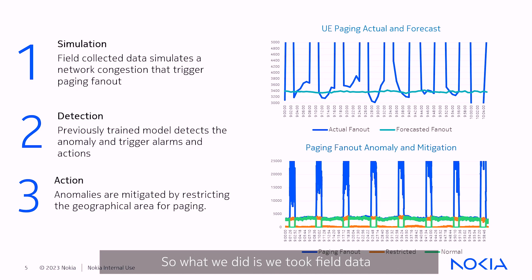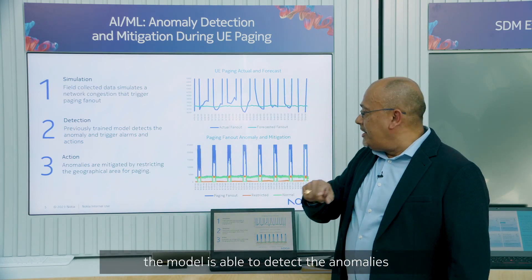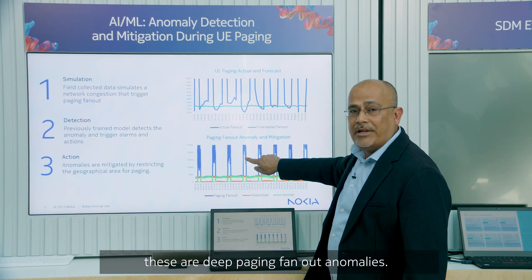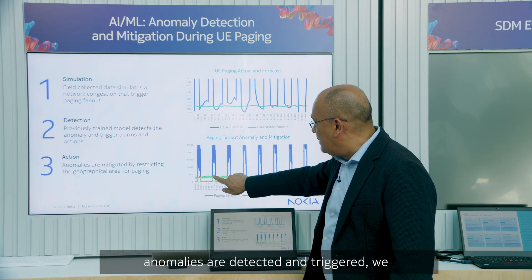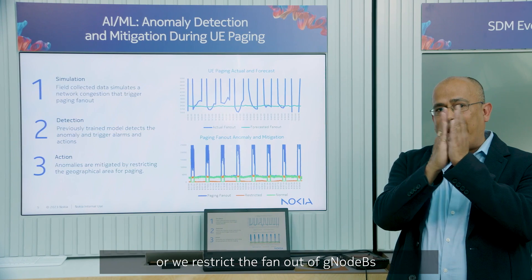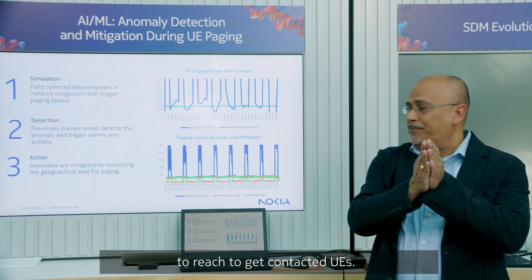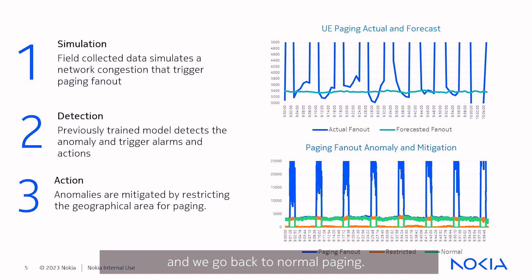We took field data and simulated network congestions in our lab to prove the model. When we deployed the model, it is able to detect anomalies and perform mitigations. These lines you see here are the paging fanout anomalies. You can see these orange lines — as soon as these anomalies are detected and triggered, we perform mitigation by restricting the fanout of gNodeBs we're going to contact to reach the UEs. Once the anomaly is gone, we remove the restriction and go back to normal paging.